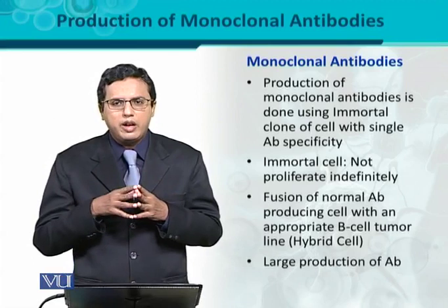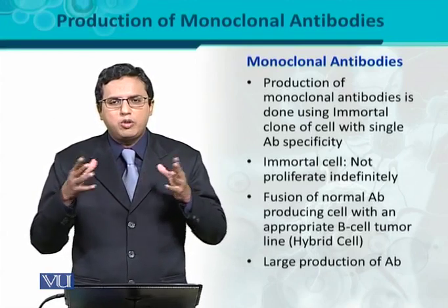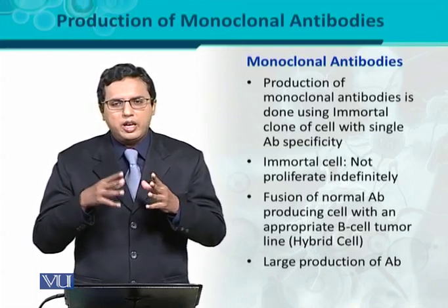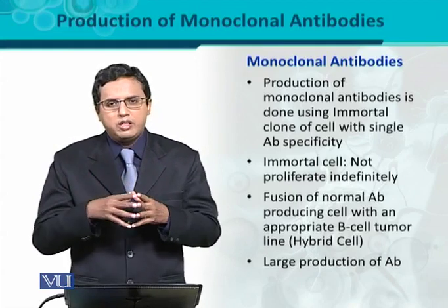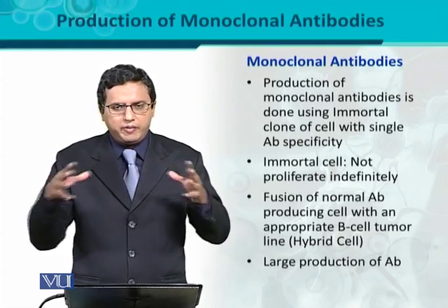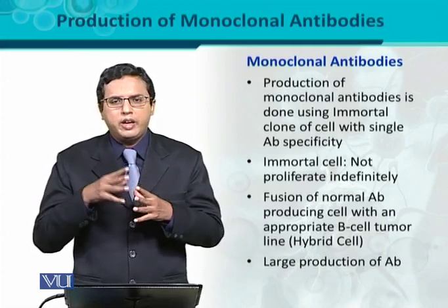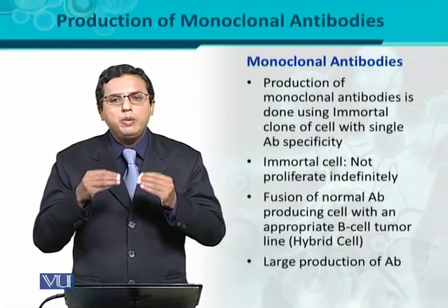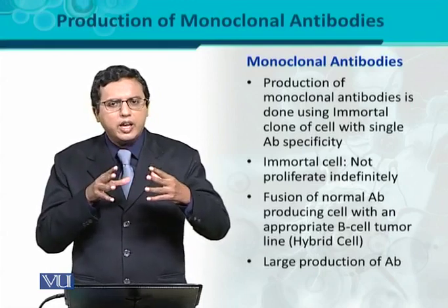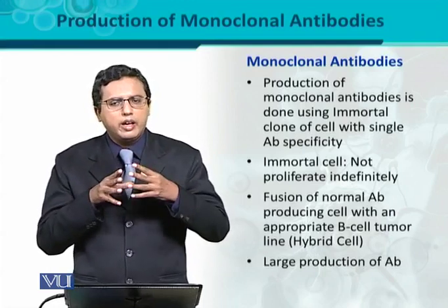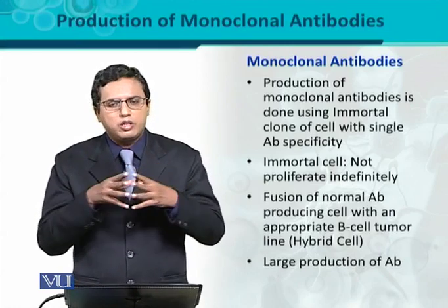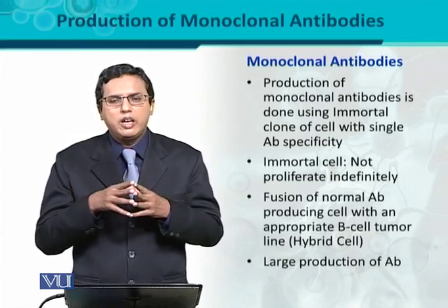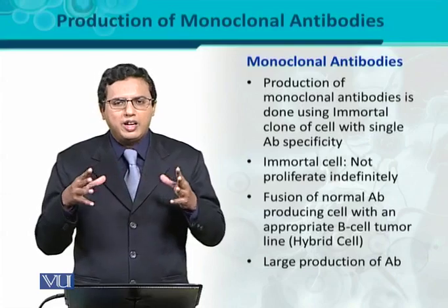Aur us antibodies ka jo level hai it would be higher as compared to normal antibody production. Kyunki in this case yeh jo cells hain these are immortal — they persist for a longer time and similarly they have an ability to proliferate indefinitely. So jab jab wo proliferate karte rahenge, waise waise they are just going to produce the antibodies. So those antibodies would be monoclonal in nature — kyunki jo B cell hai wo single clone hi hai jo select kiya gaya hai aur us ki fusion hui hai with the immortal cell. There are no different clones of the B cell, that is why the antibodies in this case are called monoclonal antibodies.